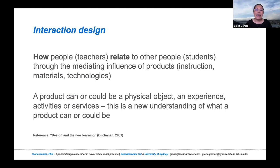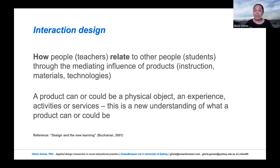I bring thoughts from two design perspectives I apply in my work: interaction design and socially inclusive design. Interaction design is defined as how people — for example, teachers — relate to other people, for example students, through the mediating influence of products. This could be instruction, materials, or technologies. In this design perspective, a product can be a physical object, an experience, activities, or services. This is a new understanding of what a product can or could be.